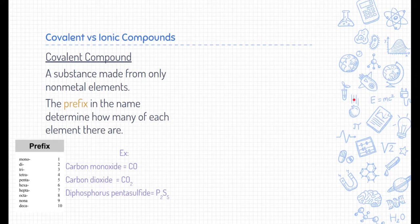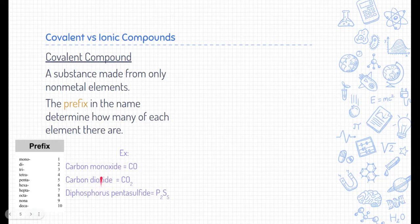One example of a covalent compound is carbon monoxide — CO. Mono means one, so there's one oxygen. Carbon doesn't have a prefix because it's the first element; the fact that it's there means it's one. Mono is sometimes not used in covalent compounds, but it's always the second element that gets it if so. Our second example is carbon dioxide — CO2. The prefix di- on oxygen means there are two of them. Diphosphorus pentasulfide is our third example: di- means two phosphorus, and penta is five for the sulfurs.